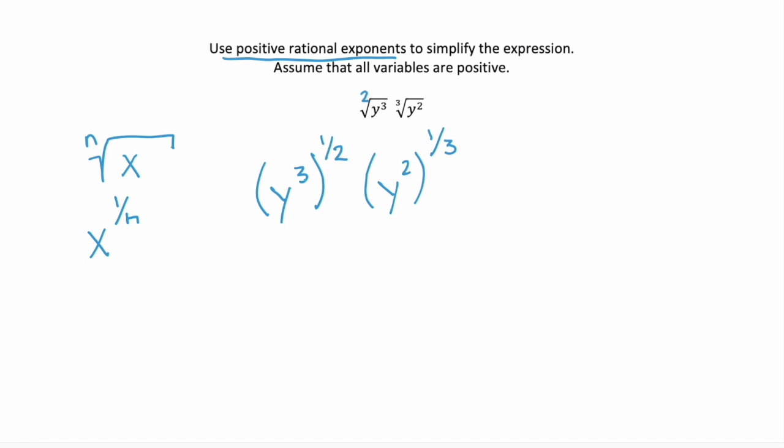Now we're going to use the power to a power rule to simplify each of these groupings. So the first, y cubed to the power of 1 half is the same as y to the power of 3 times 1 half. And the second is y to the power of 2 times 1 third. And now we can just multiply those exponents. So 3 times 1 half is a power of 3 halves, and 2 times 1 third is a power of 2 thirds.